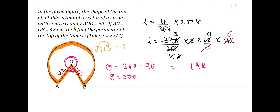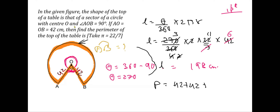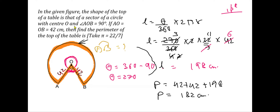The arc length is 198 centimeters. The perimeter includes both radii plus the arc length: 42 plus 42 plus 198. That is 84 plus 198 equals 282 centimeters — this is the perimeter of the top of the table.